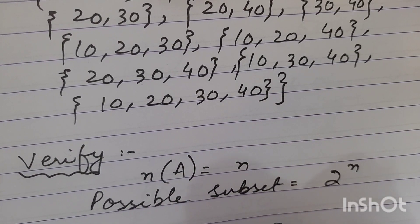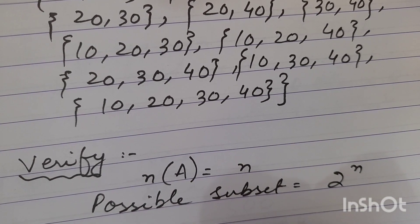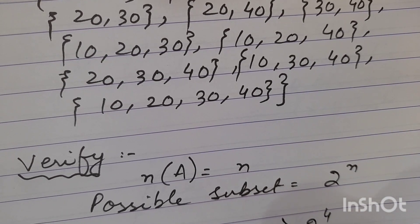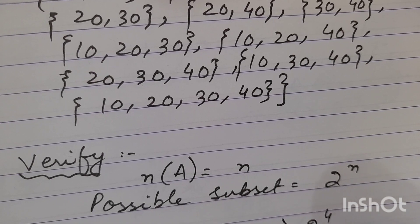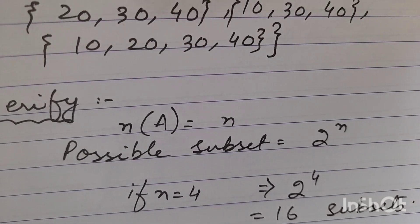And we have, if n is equal to 4, then 2 to the power 4 is equal to 16 subsets. And we have 16 subsets, and it is verified.